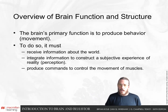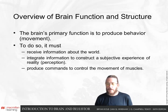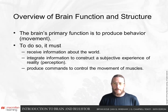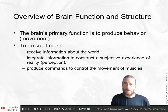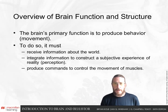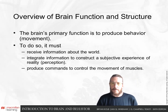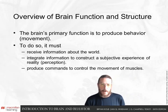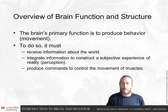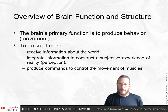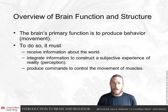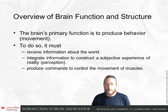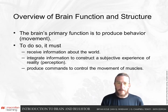Our brain's primary function in the world is to produce our behavior — by behavior we mean movement throughout the world. To do that, we have to receive all the sensory information about our environment, integrate together various information whether it's our vision or hearing, to create a subjective perception of the world, and use that perception to produce the appropriate commands to move our muscles to act appropriately.